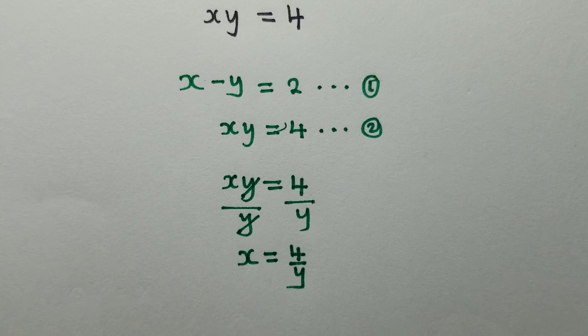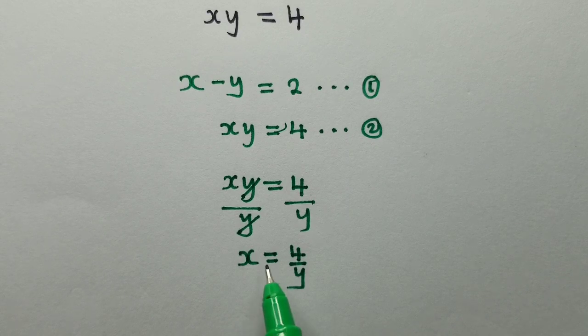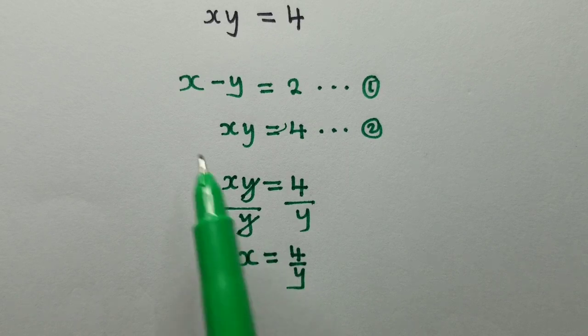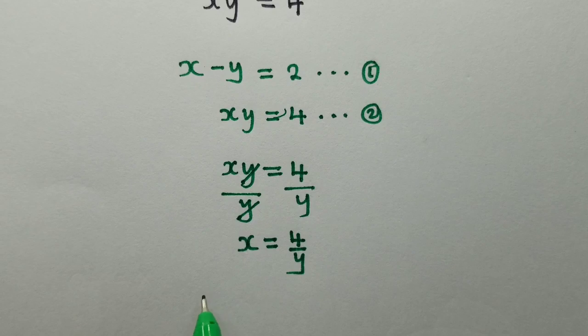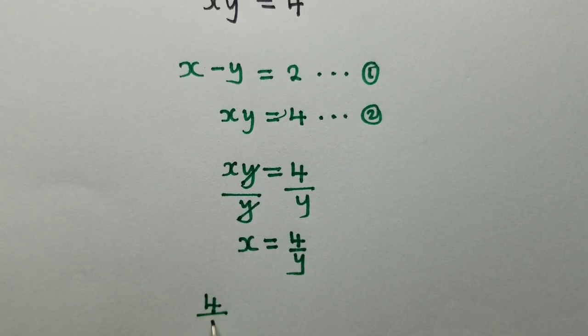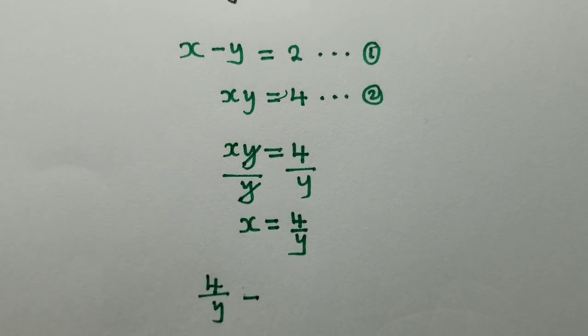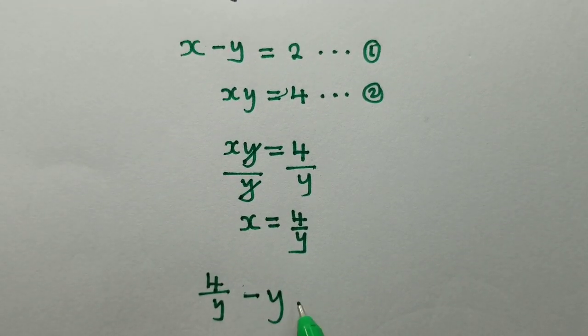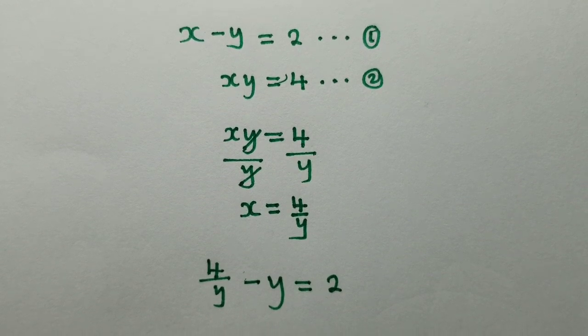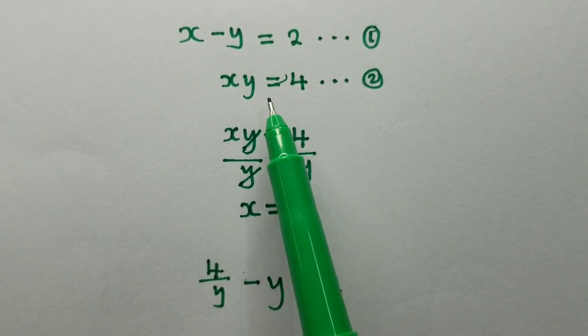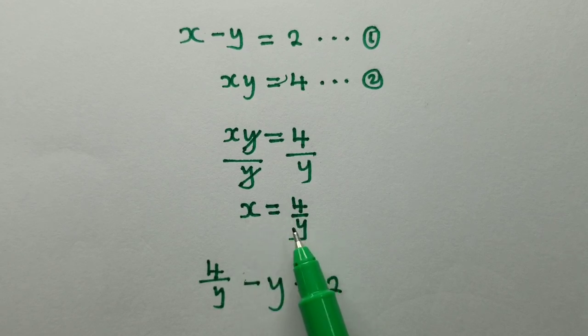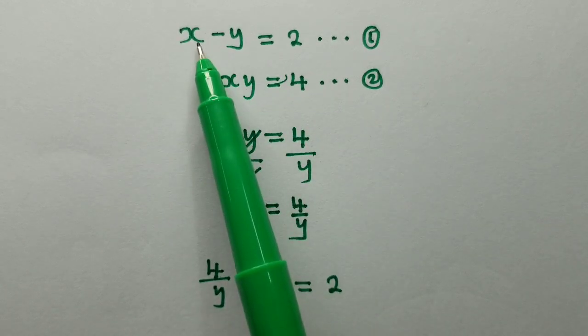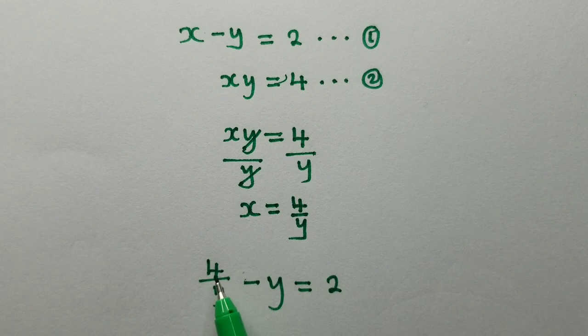So now after solving like this, I'm going to substitute 4 over y right here where x is. So I'm going to say 4 over y minus y is equal to 2. So if you can see, this is equation 2. I made x subject of the formula, which is equal to 4 over y. And then I got this 4 over y and substituted it in equation 1 right here. So this is what we have.